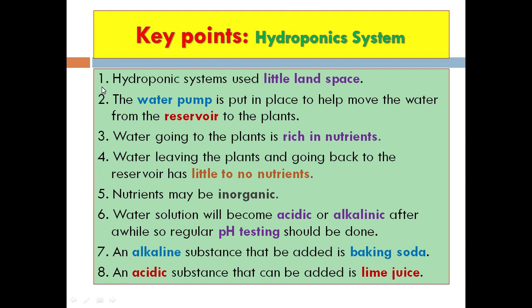Key points with the hydroponic system: number one, it uses little land space — it can be placed in the yard or veranda, in a greenhouse, and can accommodate vertical farming; number two, the water pump moves water from the reservoir to the plants; number three, water going to the plants is rich in nutrients; number four, water leaving the plants and going back to the reservoir has little to no nutrients, as the plants filter out the nutrients.